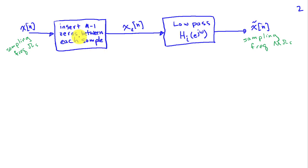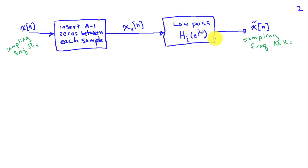The way we do this is we take our signal x[n] at the lower sampling rate, insert m minus 1 zeros between each sample to get a new signal x_z[n], and then pass that through a low-pass filter H_i to obtain our upsampled signal x̃[n]. We start with sampling frequency ω_s and end with sampling frequency m·ω_s.